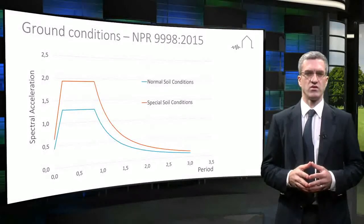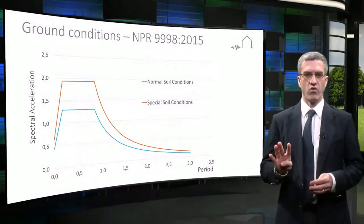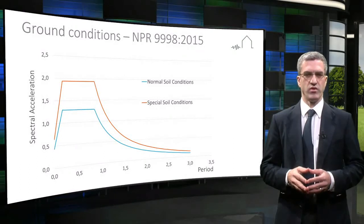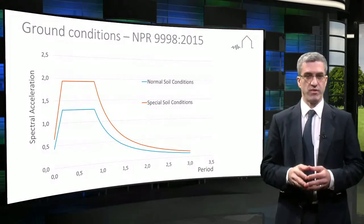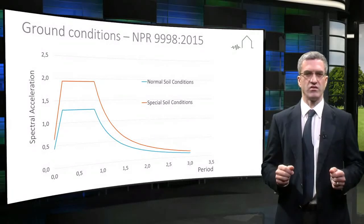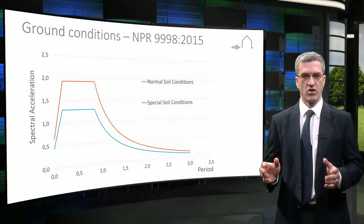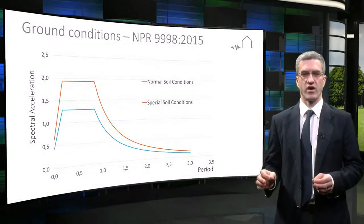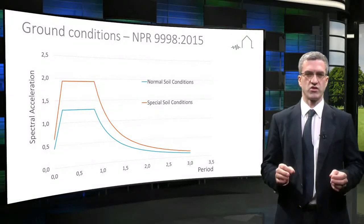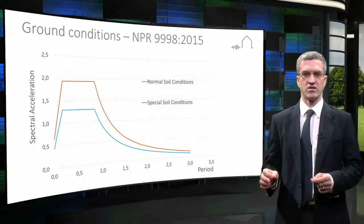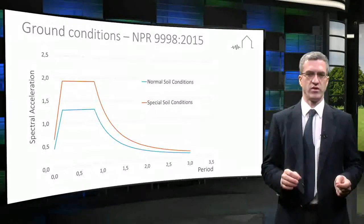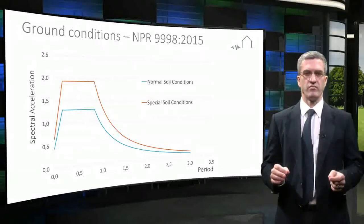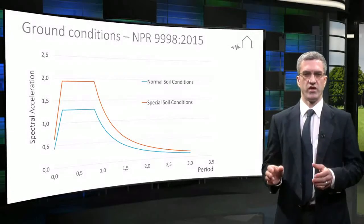The NPR provides one horizontal spectrum for normal site conditions, which is only valid if four specified conditions defined in the NPR are met. For special site conditions, the NPR currently offers the engineer the choice of using a site-specific method to determine the surface spectra, or to multiply the normal site conditions spectra by 1.5. This graph shows the surface spectra for normal and special site conditions according to the NPR. Similar to Eurocode 8, the NPR also defines the vertical spectra for the engineer.